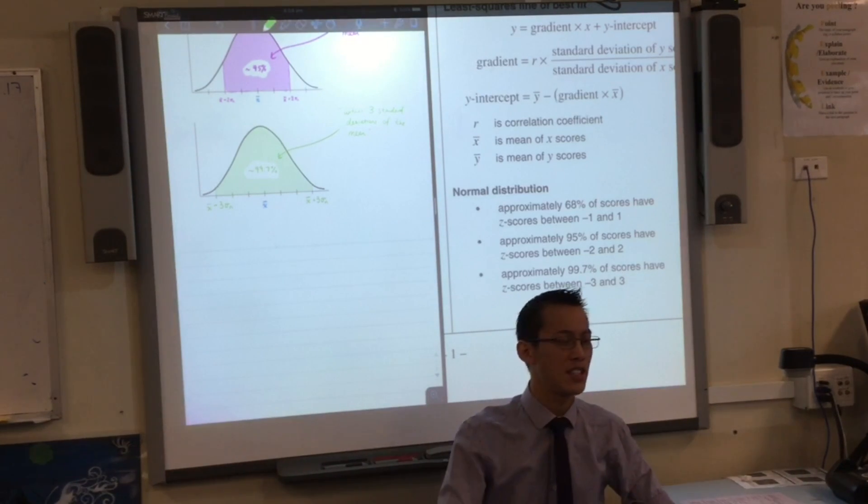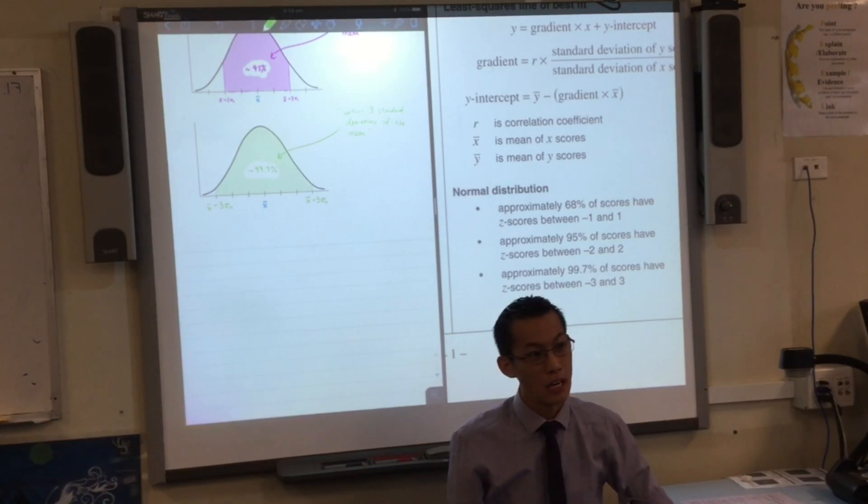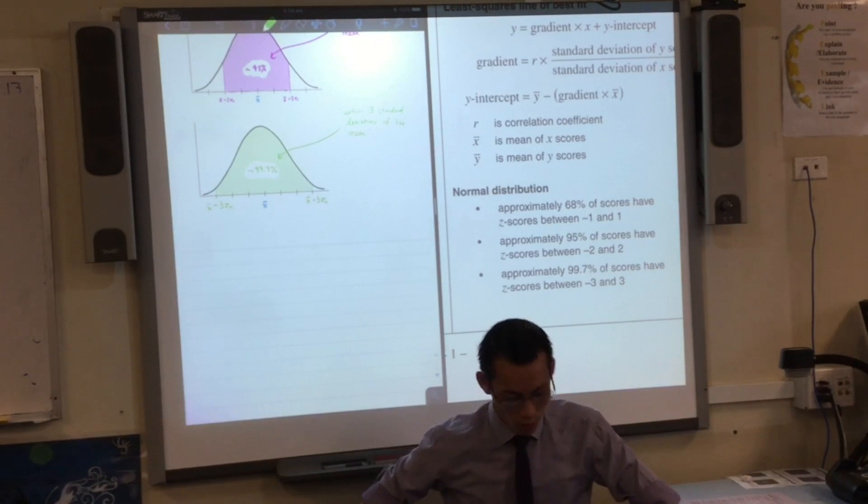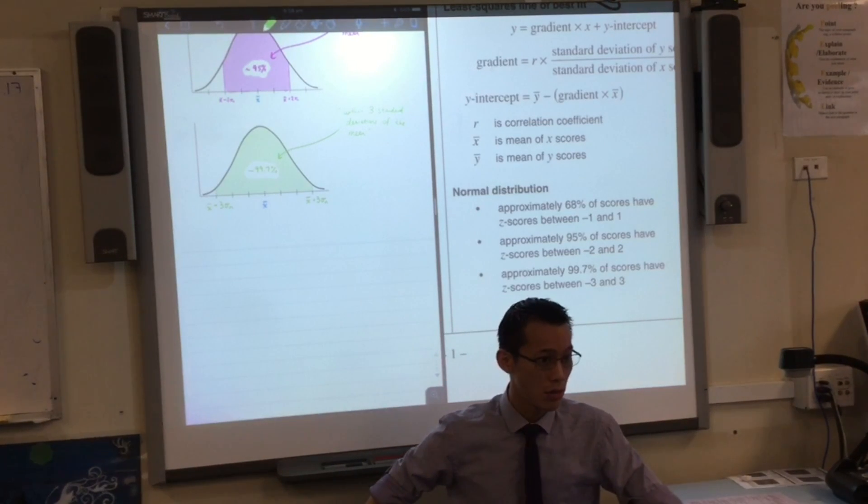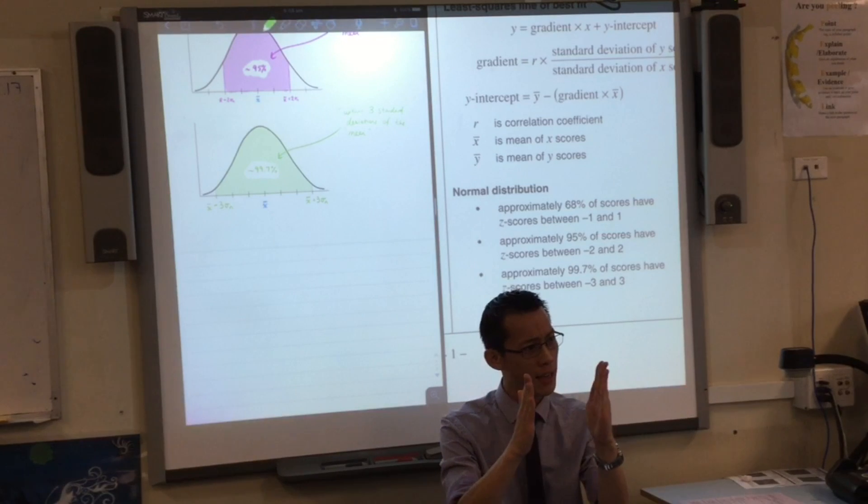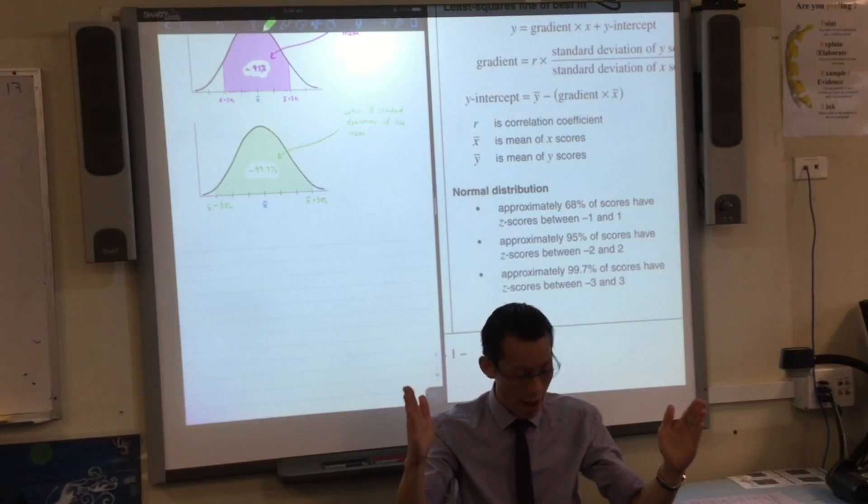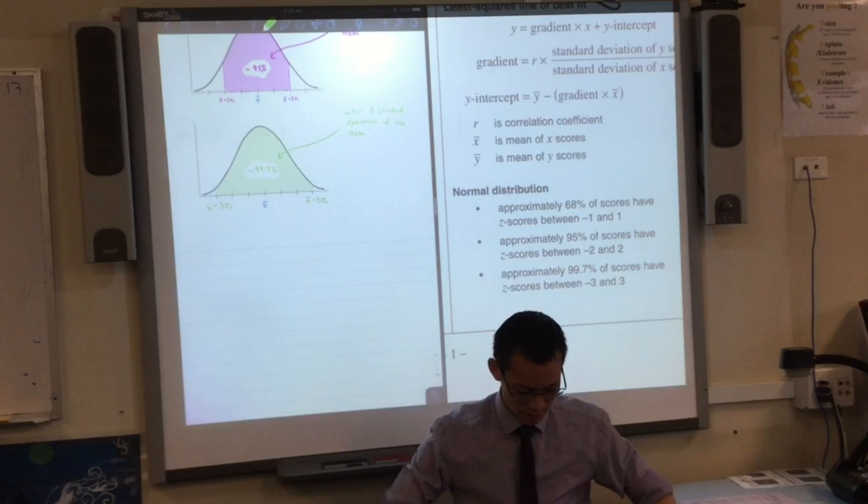So if you have a Z score say 0.5, you're in that range of 68%. If you've got a Z score of negative 1.2, you've gone outside the first bracket now. You're in the second bracket, so you're within 95%, and then so on.